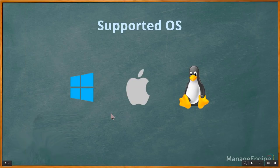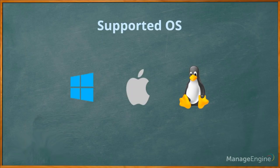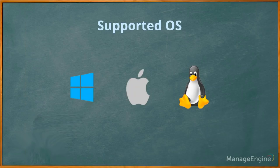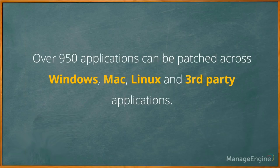Desktop Central supports patches for all three flavors of operating system: Windows, Mac, and Linux. For Windows, we support all operating systems from Windows XP through Windows 10. For Linux, we currently support Ubuntu and Debian, and within the third week of April we'll extend support to CentOS and Red Hat Linux. We offer support for 950-plus applications, and for third-party patches we support around 250-plus applications.